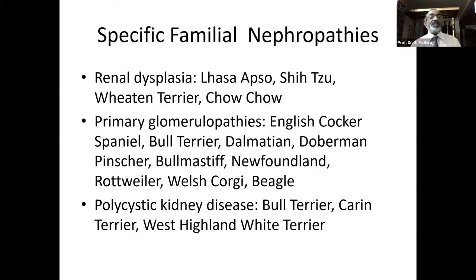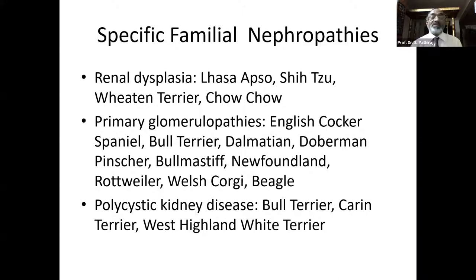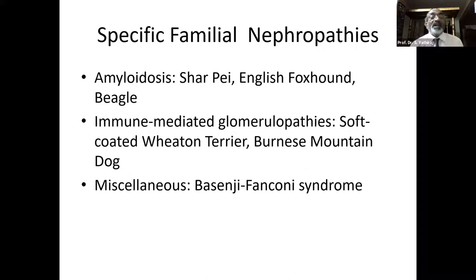Many practitioners these days use ultrasonography, and sometimes this is an incidental finding. Renal dysplasia in Lhasa Apso; primary glomerulopathies in English Cocker Spaniel, Bull Terrier, Dalmatian, Doberman Pinscher, Bull Mastiff, Newfoundland, Rottweiler, Belgian Cocker, Beagle; and polycystic kidney disease in Bull Terriers, Cairn Terriers, West Highland White Terriers. Amyloidosis in Shar Pei, English Foxhound, Beagle; immune-mediated glomerulopathies in Soft Coated Wheaten Terrier, Bernese Mountain Dog; and Fanconi syndrome specifically in Basenji breeds.